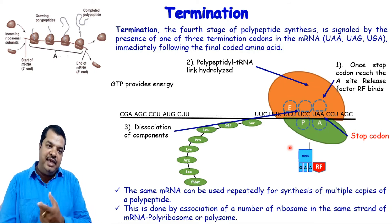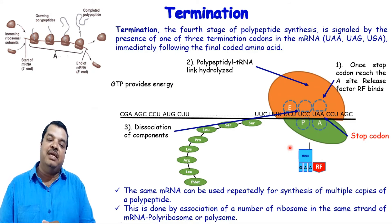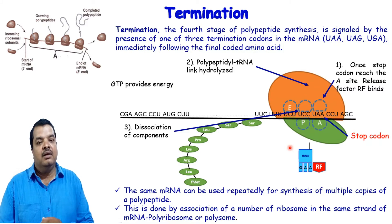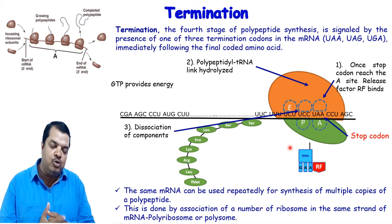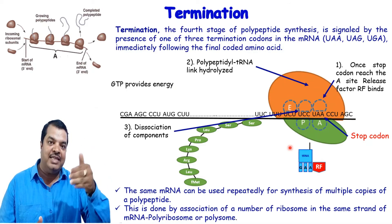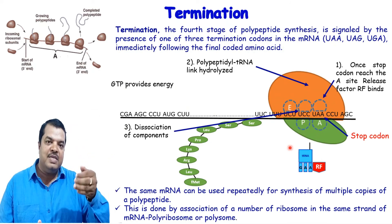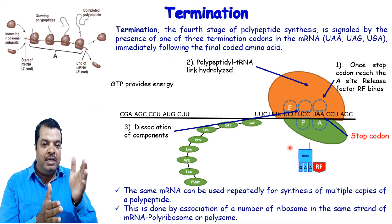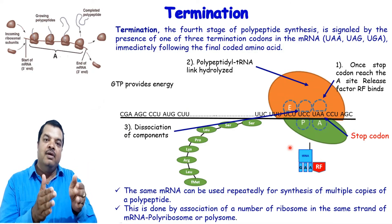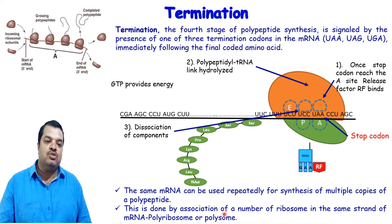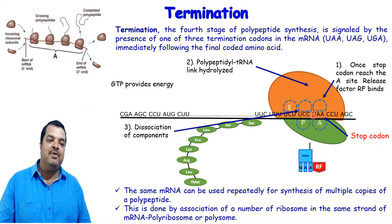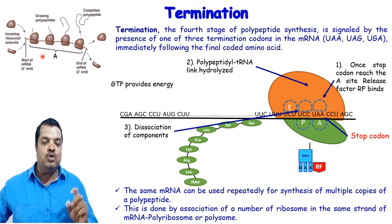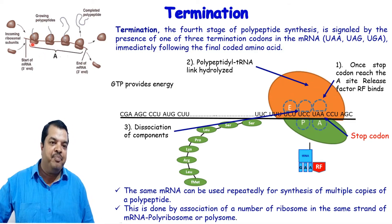The same mRNA can be used repeatedly for the synthesis of multiple copies of a polypeptide. This same mRNA can be used many times to make many copies of the same protein. If a protein's expression is high, it means many copies are being made. This is done by the association of multiple ribosomes — one ribosome moves forward, a second ribosome binds behind it and also moves along, producing its own polypeptide.